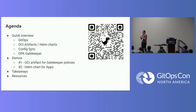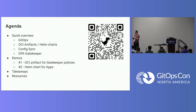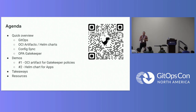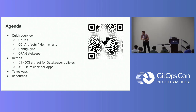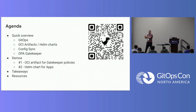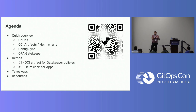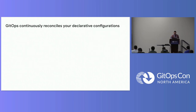Quick overview of what's GitOps. We are on a GitOps day, so there is plenty of content defining GitOps. In the context of this presentation, we will talk about OCI artifacts and Helm charts and their advantages. We will talk about ConfigSync, one of the GitOps tools out there, and OPA Gatekeeper. We will have two demos, and some takeaways and resources at the end.